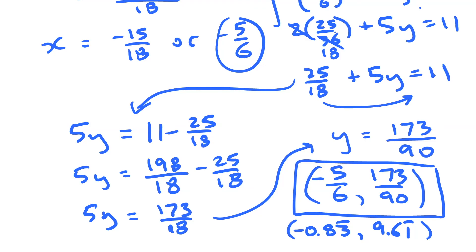That is using elimination to solve a system of equations. The key point is that you multiply one or both equations so that when you add them up you eliminate one of the variables, then solve the leftover equation that has only one variable in it.